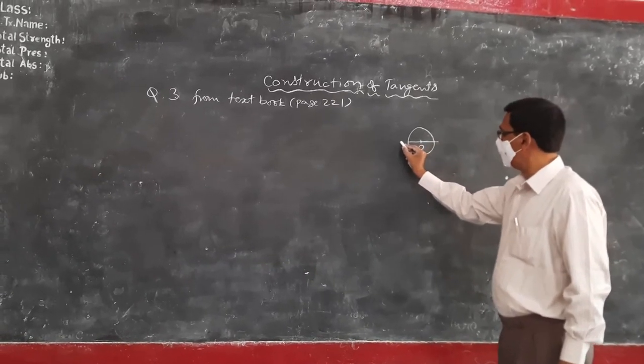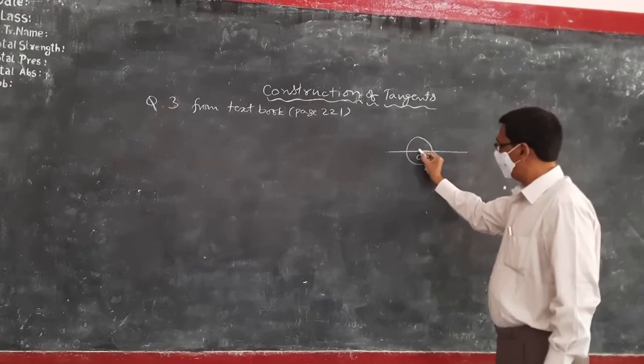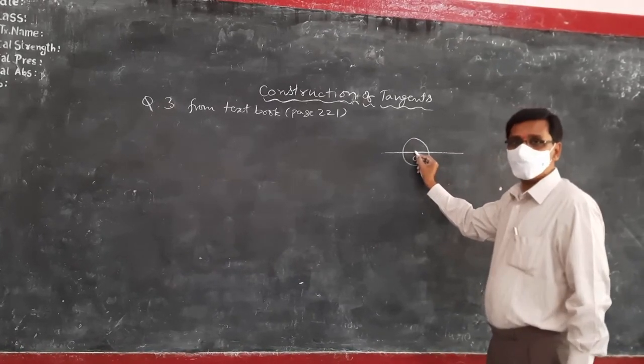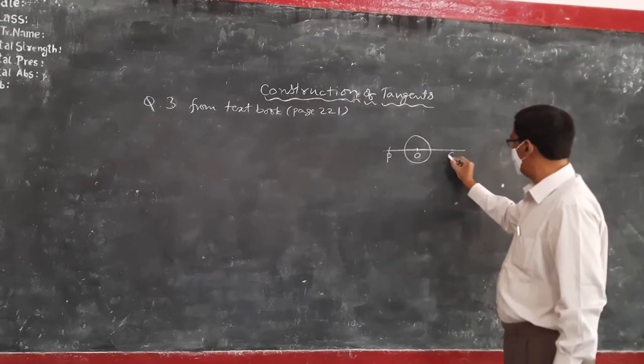And on either side, extend the diameter like this on either side. So this is the circle with center O. And from O, a 7cm arc you cut, this is T, and that 7cm, this is Q.